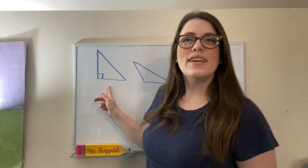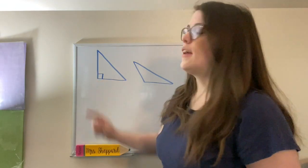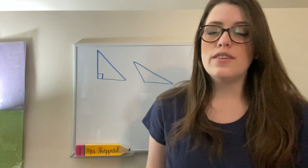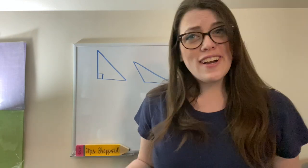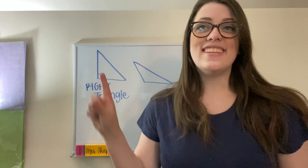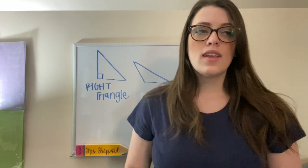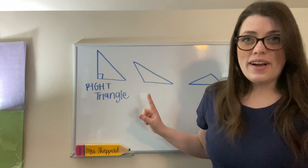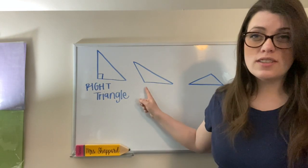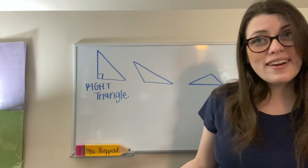So this triangle right here has a right angle. Any triangle that has a right angle is called a right triangle. That means that it has one angle that is 90 degrees. This triangle right here has an obtuse angle. This triangle is called an obtuse triangle.